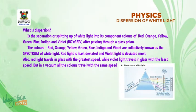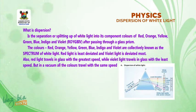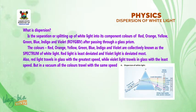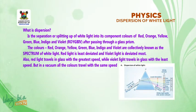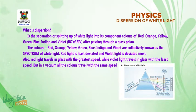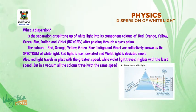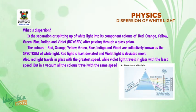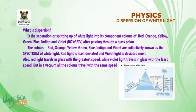indigo and violet, which can be summarized as ROYGBIV, after passing through a glass prism. The colors red, orange, yellow, green, blue, indigo and violet are collectively known as the spectrum of white light, with red light least deviated and violet light deviated most. Also, red light travels in the glass with the greatest speed, while violet light travels in the glass with the least speed. But in a vacuum, all the colors travel with the same speed.